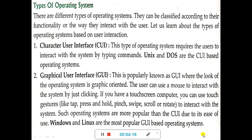Next, types of operating system. There are two types of operating system. First is the Character User Interface (CUI). This type of operating system requires the user to interact with the system by typing commands. Unix and DOS are CUI operating systems. To do any work, you have to remember the command, type the command, and then only it will execute.